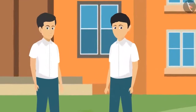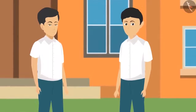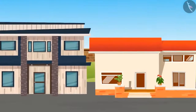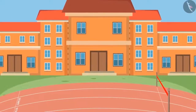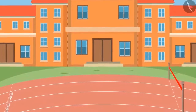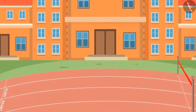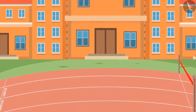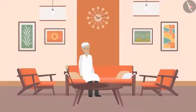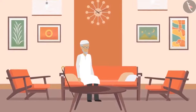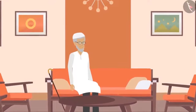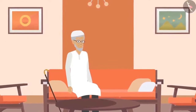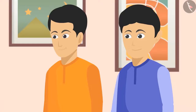Zeeshan and Sikandar are both very intelligent and studious students who live in the same lane. They have decided to take part in their school's sports tournaments and want to get trained by Raheem Chacha, who was a renowned athlete of his time.